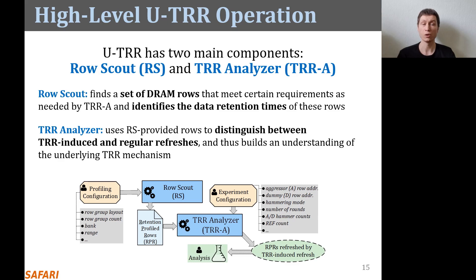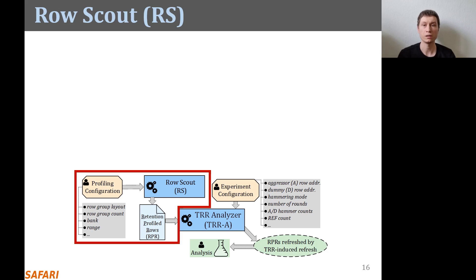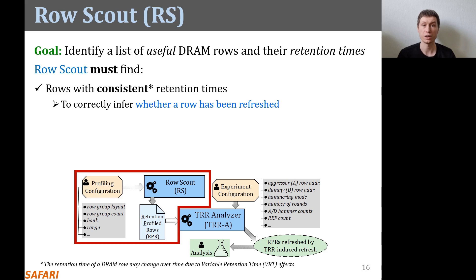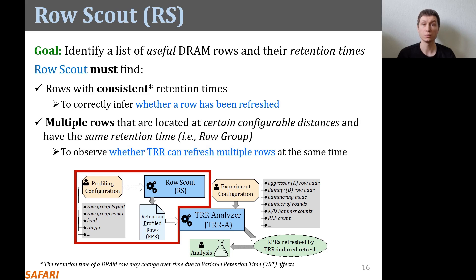The goal of Rolescout is to identify a list of DRAM rows useful for TRR analyzer, and their retention times. Rolescout must find rows with consistent retention times — this is critical for UTRR to correctly infer whether or not a row has been refreshed by a TRR-induced refresh operation. Rolescout must find DRAM rows whose retention times do not change over time due to variable retention time, or VRT, effects. Rolescout must also find multiple rows, or a row group, located at certain configurable distances and with the same retention time, so UTRR can observe whether a TRR mechanism can refresh multiple potential victim rows simultaneously.